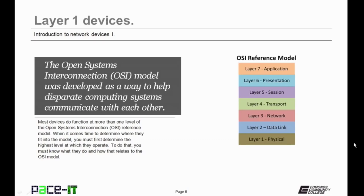We're going to be discussing the bottom three layers — Layers 1, 2, and 3 today. Most devices do function at more than one layer of the OSI reference model. But when it comes time to determining where they fit into the model, you must first determine the highest level at which they operate, because that's where they fit into the OSI model.